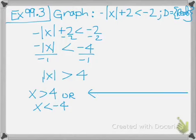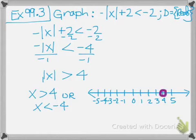We'll graph that on a number line: we want values that are greater than 4 and less than negative 4. Since we're talking about real numbers, we draw the line extending outward in both directions.